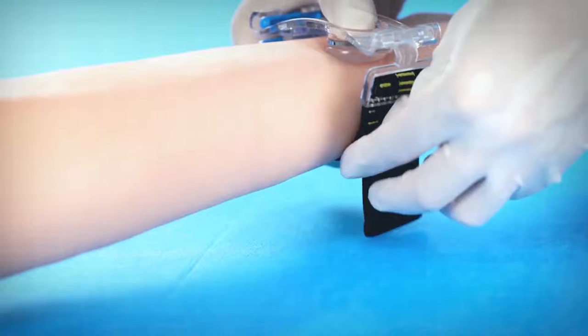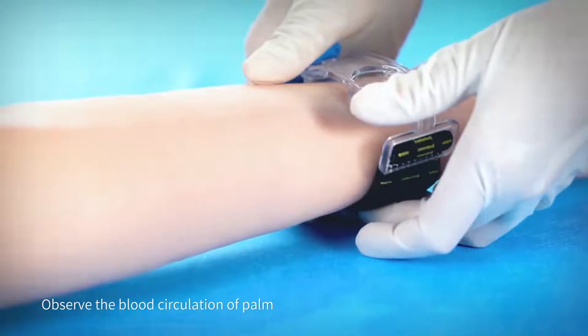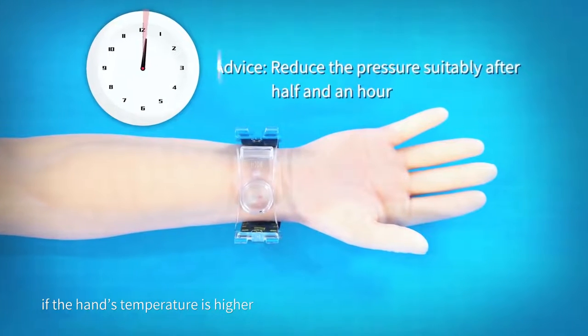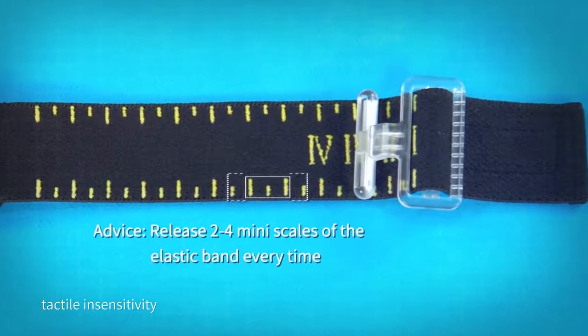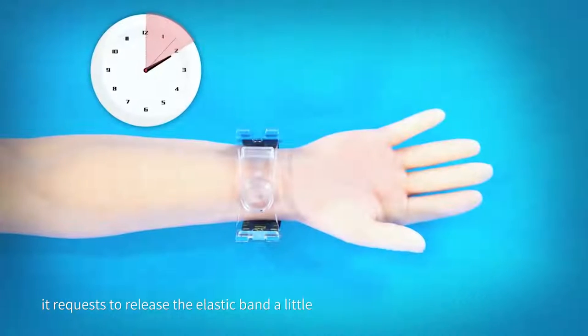Lift up the fixed loop with your finger. Observe the blood circulation of the palm. If hand temperature is higher, the skin is cyanosed, patient feels pain or numbness, or tactile insensitivity, release the elastic band a little.